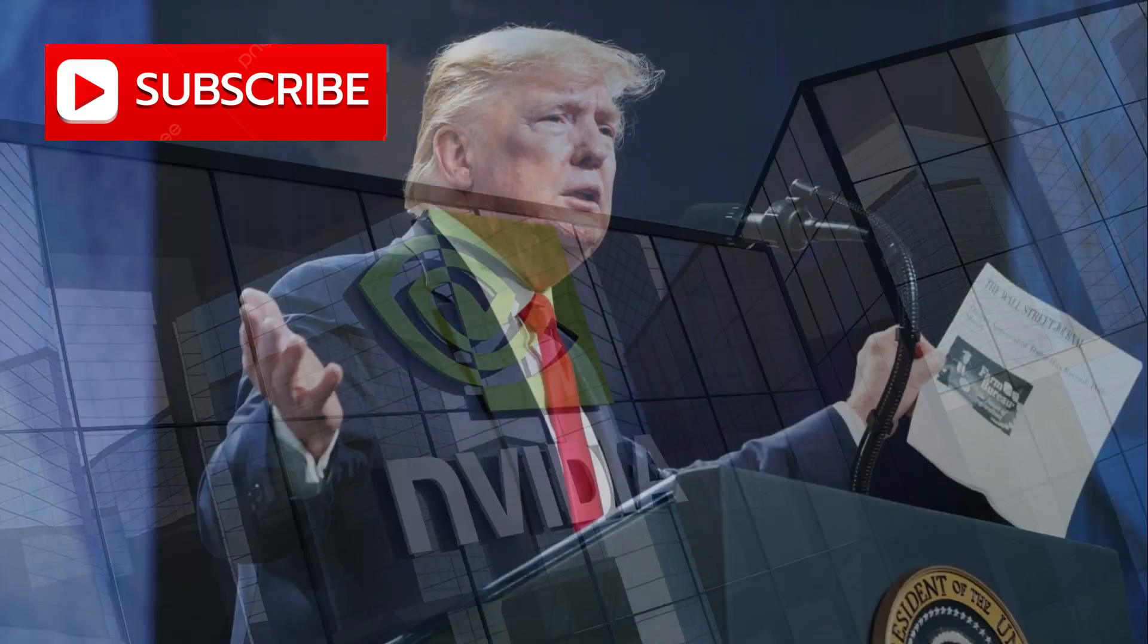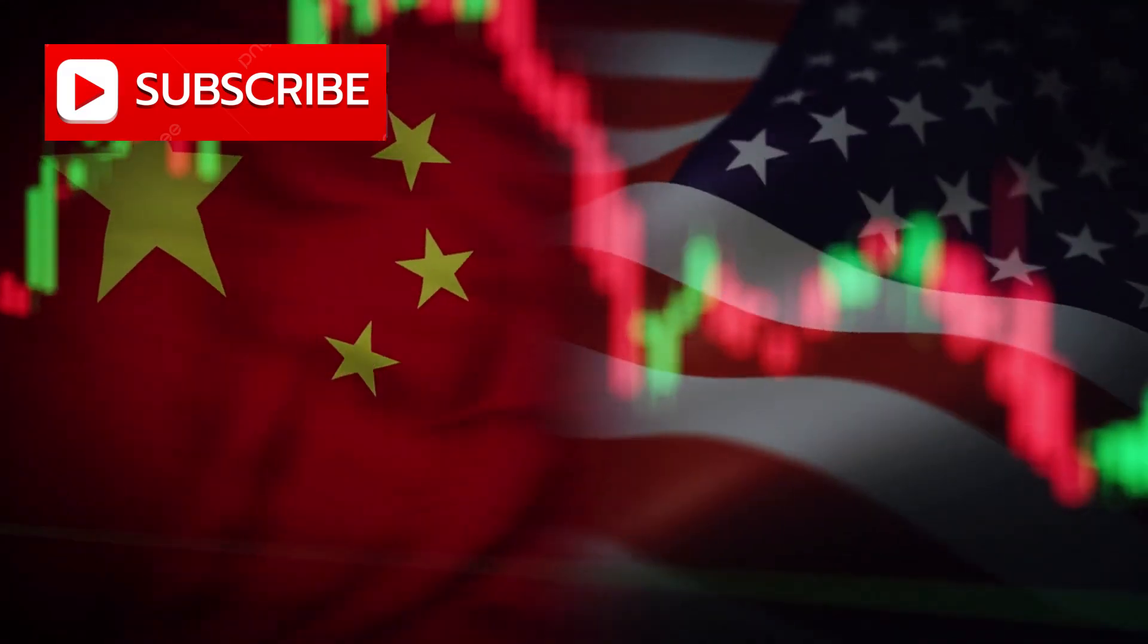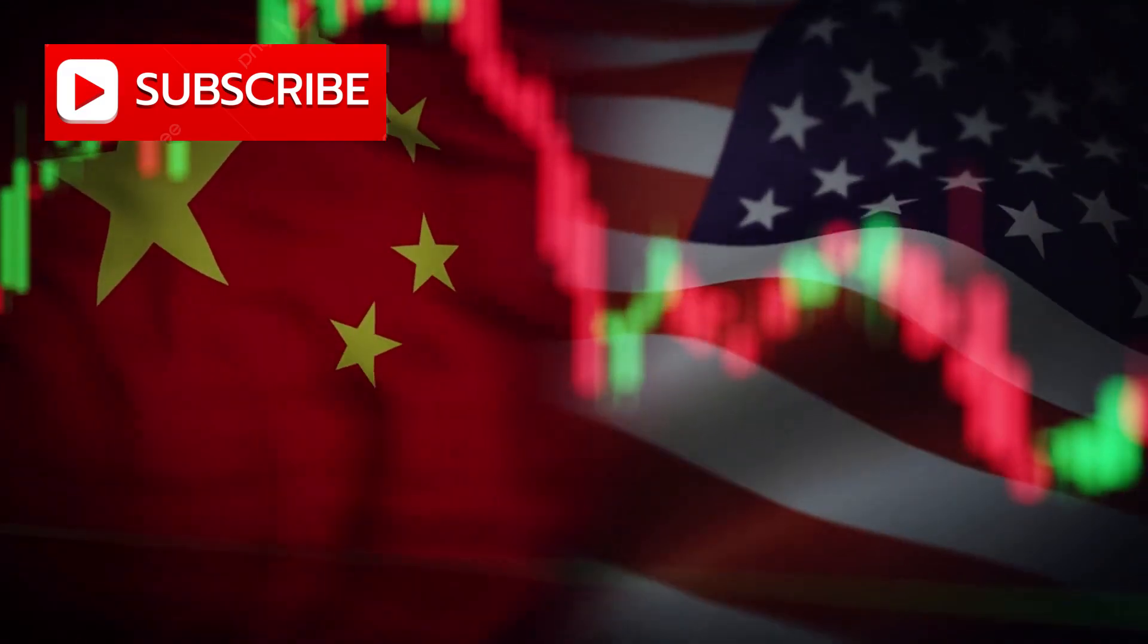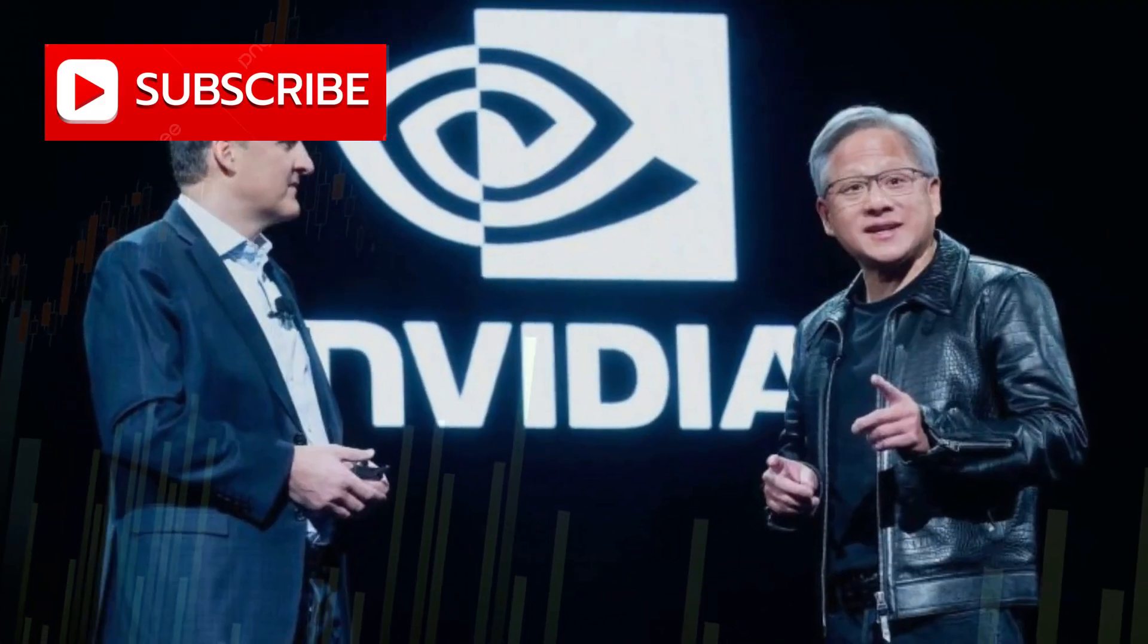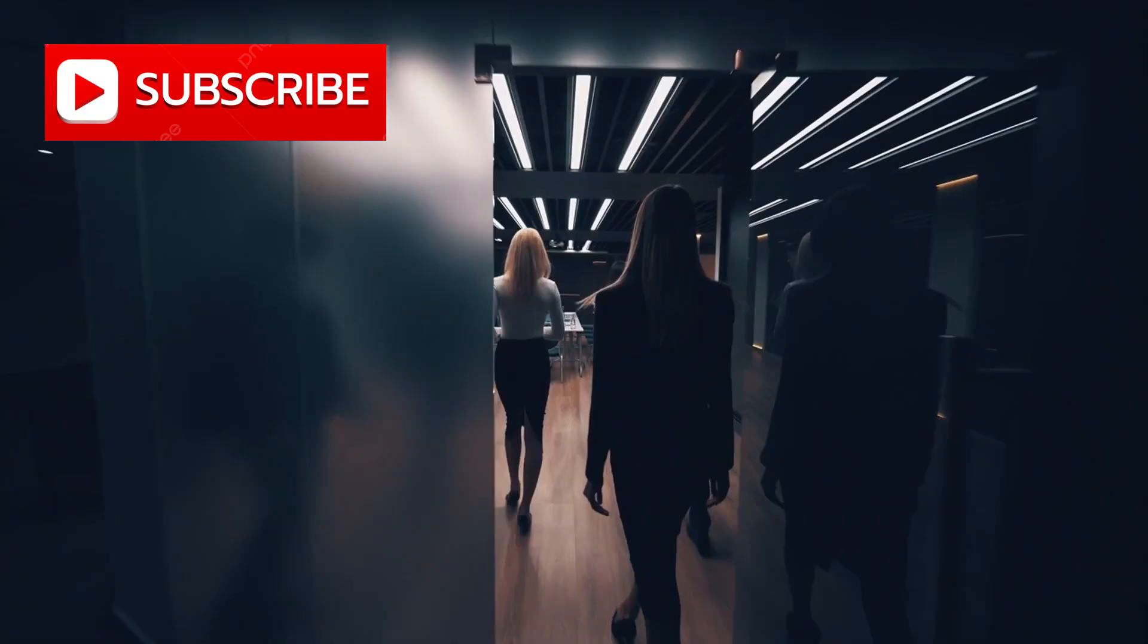But by then, Jensen Huang had already told investors the damage was permanent. Look at the sequence of events. Biden restricts chip exports. Trump tightens restrictions further. China responds by banning American chips from government-funded data centers. Then Trump opens negotiations to let Nvidia sell more advanced chips to China.